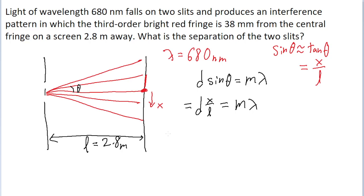So the problem was actually asking for the separation of the two slits, so we're trying to solve for d. All we need to do is take this formula and algebraically solve it for d by multiplying both sides of the equation by L and dividing both sides by x. So we can find that d is equal to lambda multiplied by m multiplied by L divided by x.